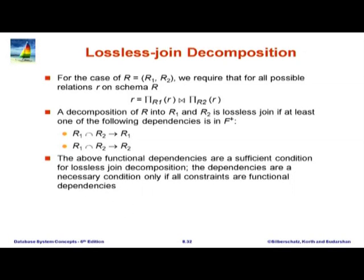Lossless join decomposition — I already explained this using the whiteboard. The decomposition of R into R1 and R2 is lossless join if at least one of these holds: the common attributes determine R1, or they determine R2. The notation more formally is: project on R1 of R, join project on R2 of R. If you decompose the schema, you decompose the relation to get π_R1(R) and π_R2(R), and their join should give us back R.